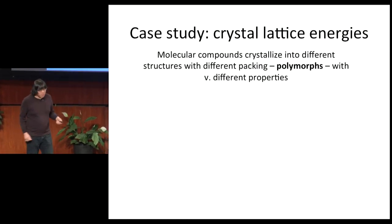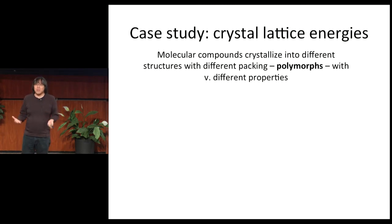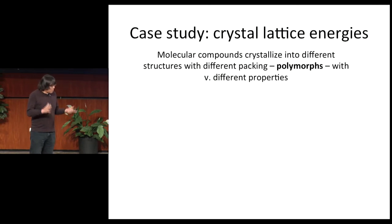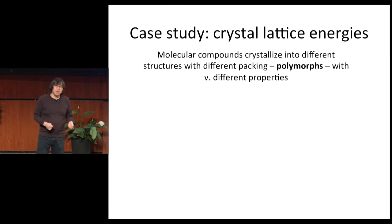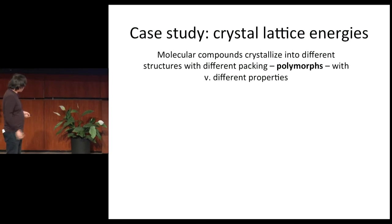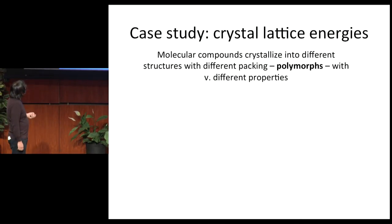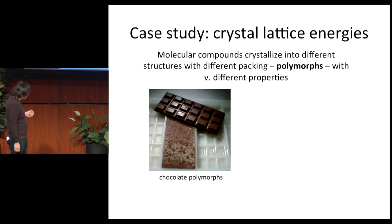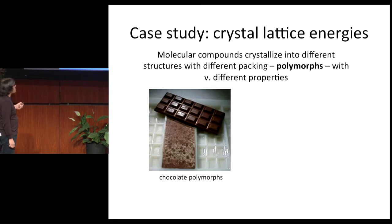Let me show a real-world example: computing lattice energies of crystals. The lattice energy is the amount of energy that holds a crystal together and determines its stability. This problem is interesting because typical chemical compounds — molecules described by their chemical formula — when they crystallize, can crystallize into many different similar forms called polymorphs, where the molecules pack slightly differently. Even though the packing is only slightly different, in many cases polymorphs have very different properties. For example, chocolate has several polymorphs — the chocolate you buy in stores is in one form, but if you leave it under the wrong conditions, the molecules rearrange their packing into a slightly different crystal structure, giving it an unpleasant appearance.